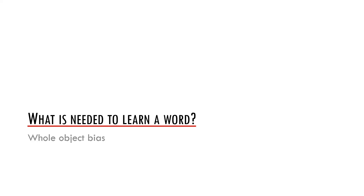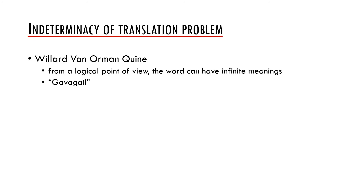Now let's turn to the whole object bias. To illustrate the point, teachers and textbook authors typically use the indeterminacy of translation problem posited by the philosopher Willard Quine. Quine illustrates it with a clear example: imagine you are a guest of an indigenous community with which you share no language. You are on a grassland and a rabbit runs past you. One of the people shouts 'Gavagai' and points at the rabbit. From a logical point of view, the word can have infinite meanings — it could mean 'a rabbit,' 'the rabbit is fast,' 'sneaky creature,' 'the fur is white as snow,' and so on.